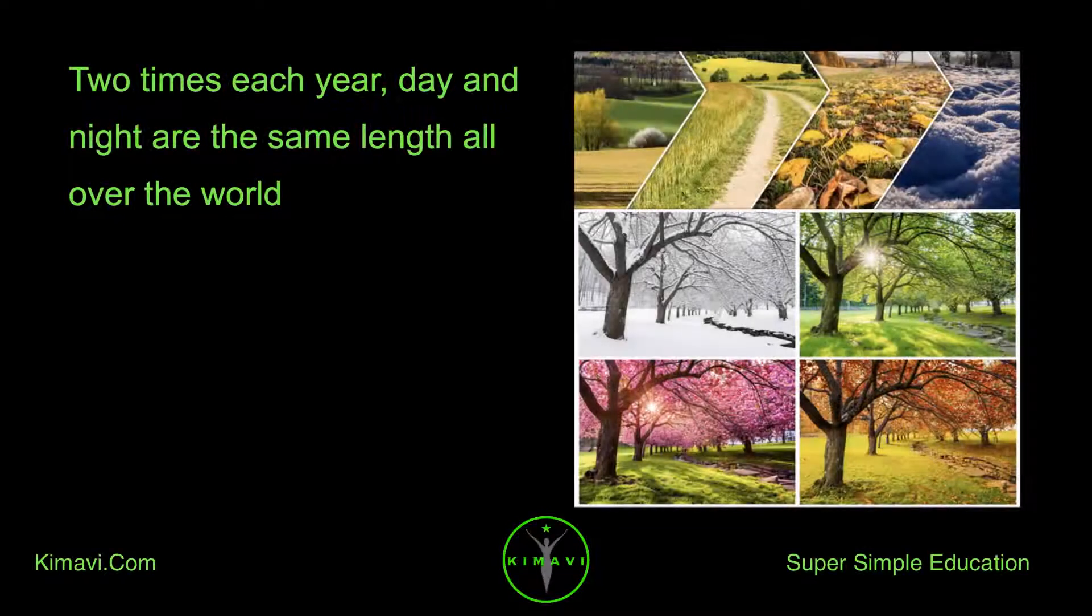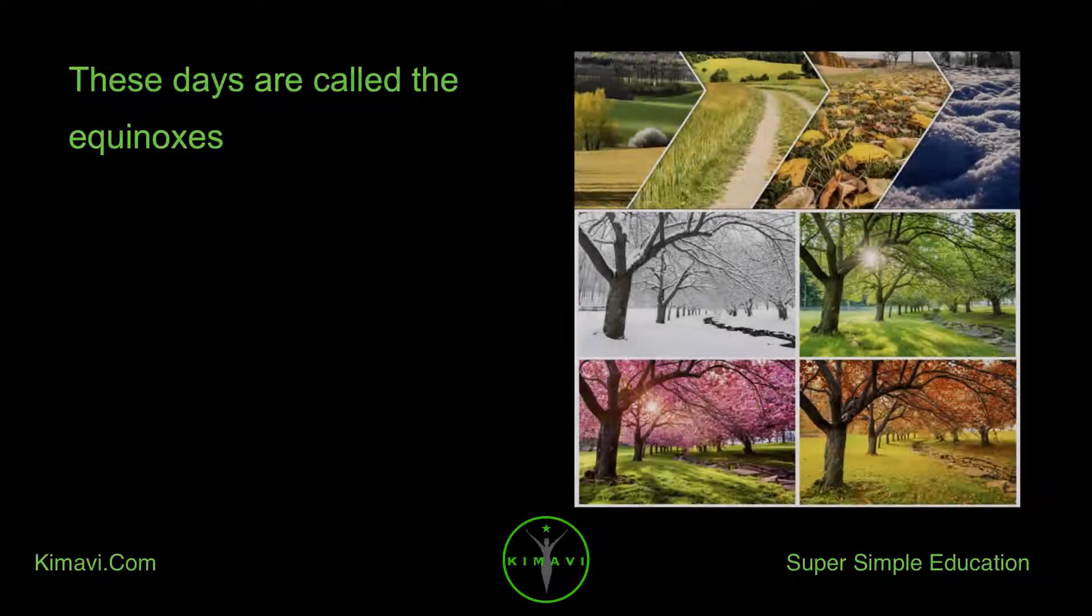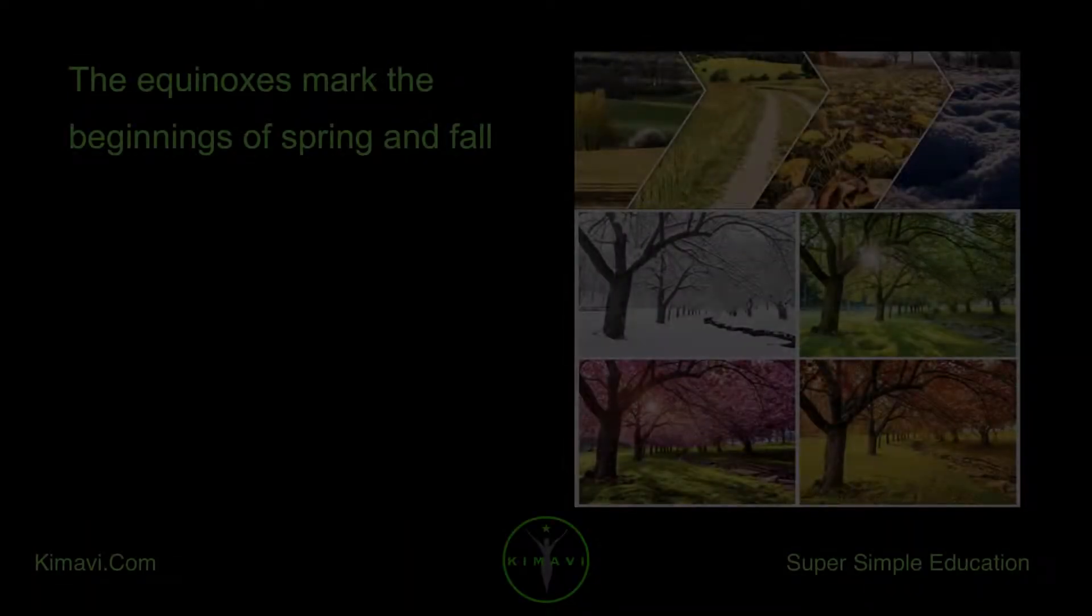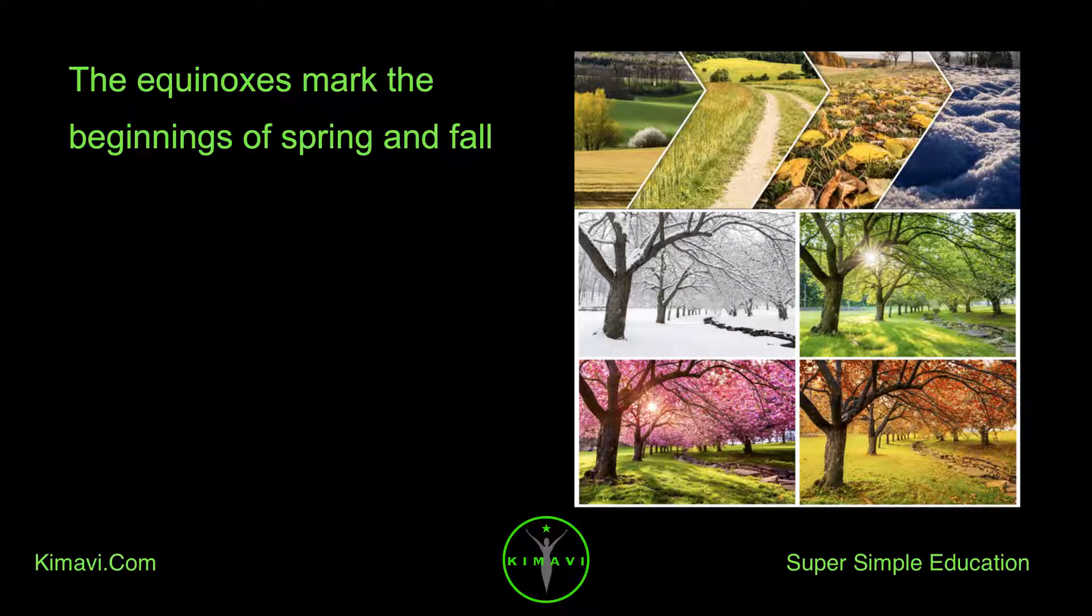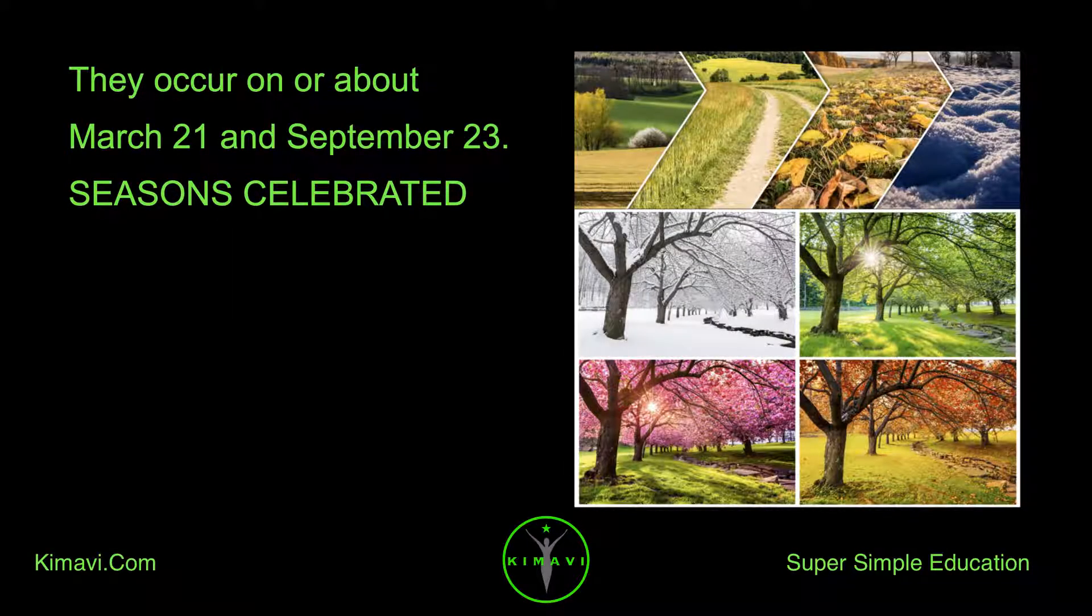Equinoxes. Two times each year, day and night are the same length all over the world. These days are called the equinoxes. The equinoxes mark the beginnings of spring and fall. They occur on or about March 21 and September 23.